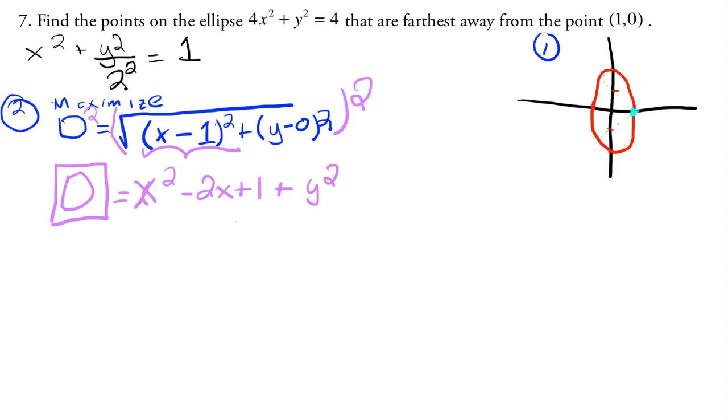Well, let's just write it out as y². Okay, then the third step, remember we have to write this as a function of one variable. So the most obvious choice is to solve for y squared on the original. So y² is equal to 4 - 4x².